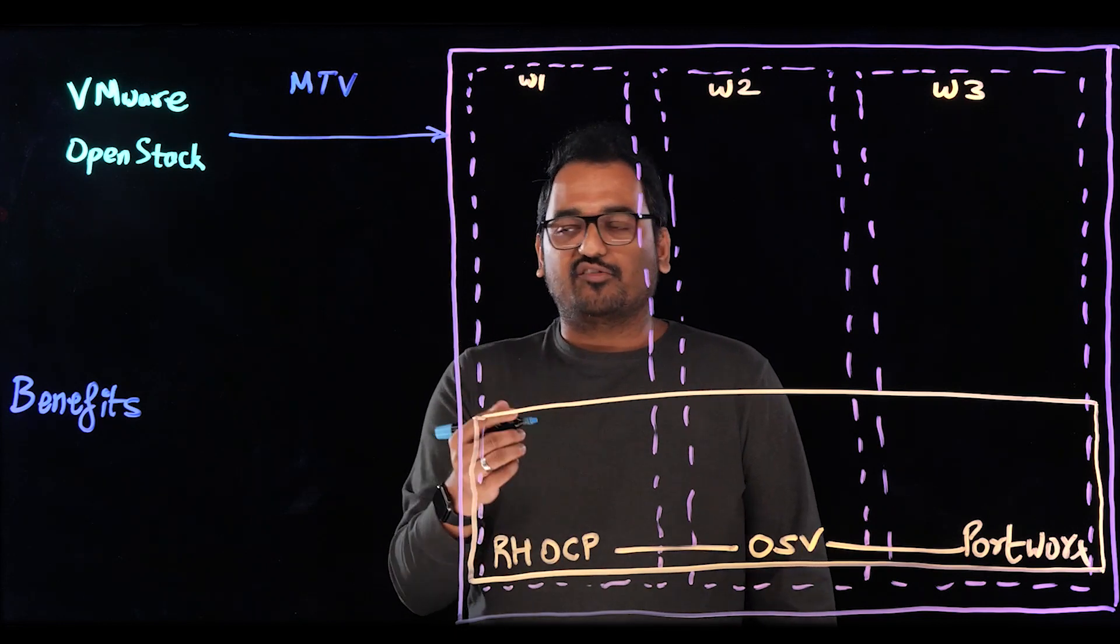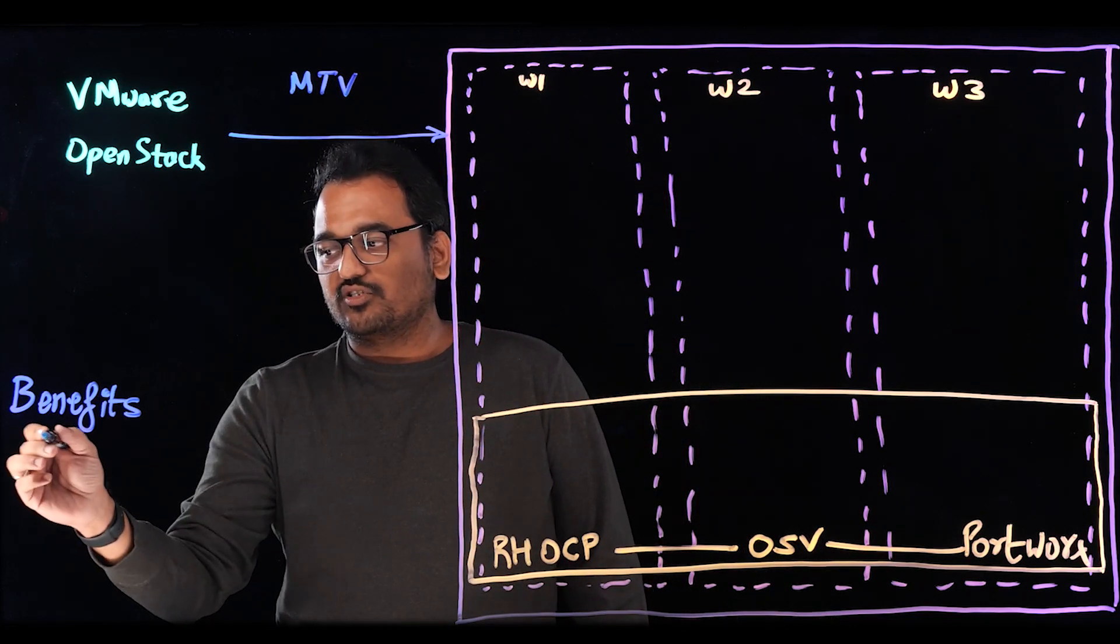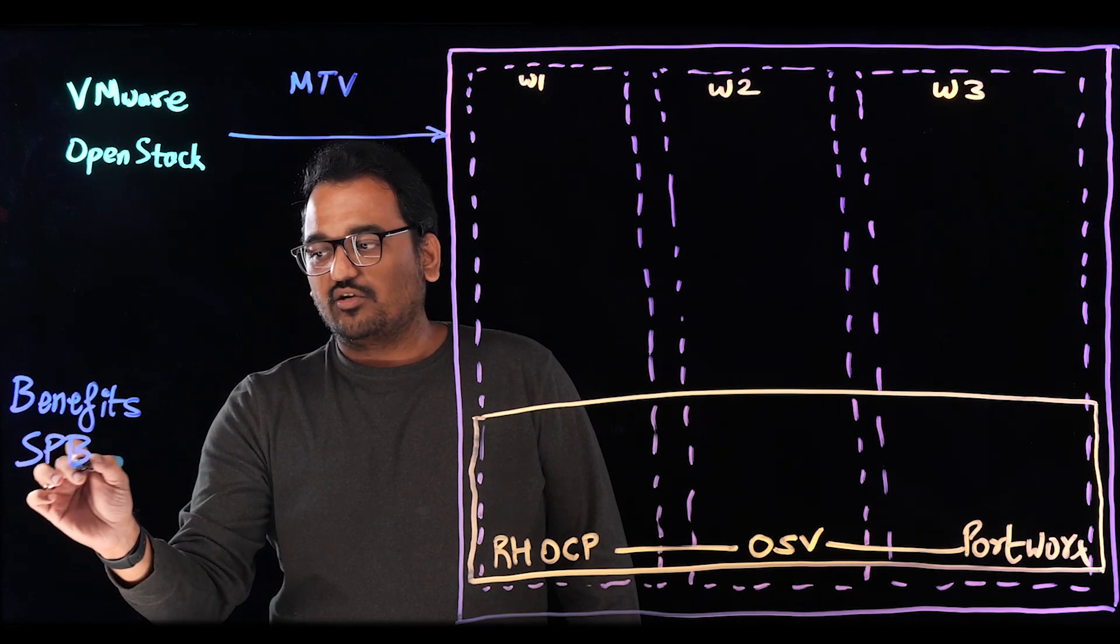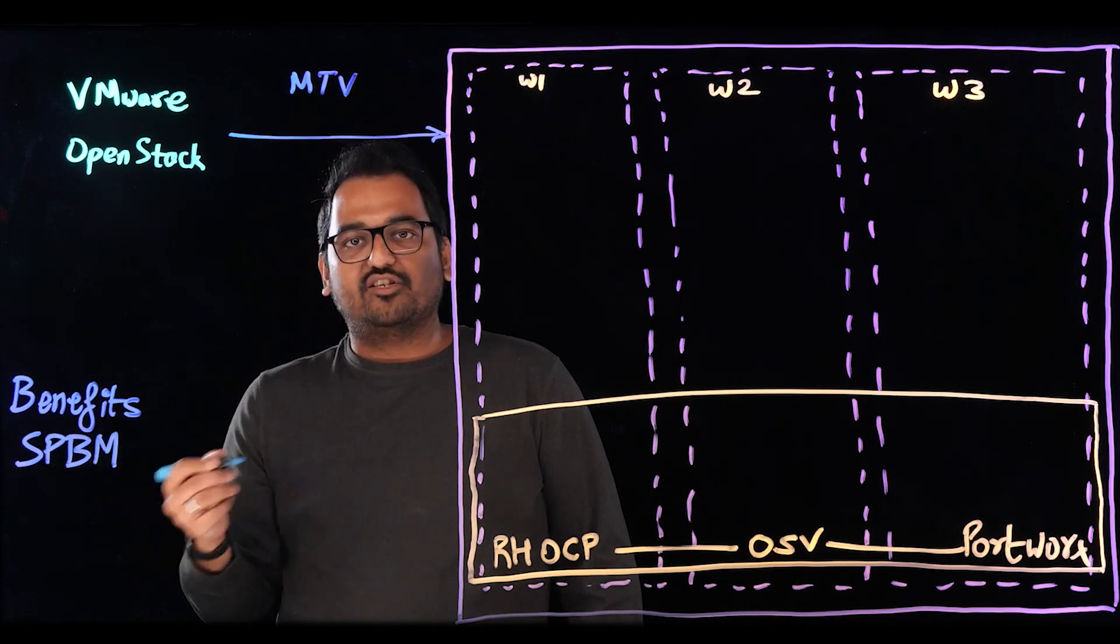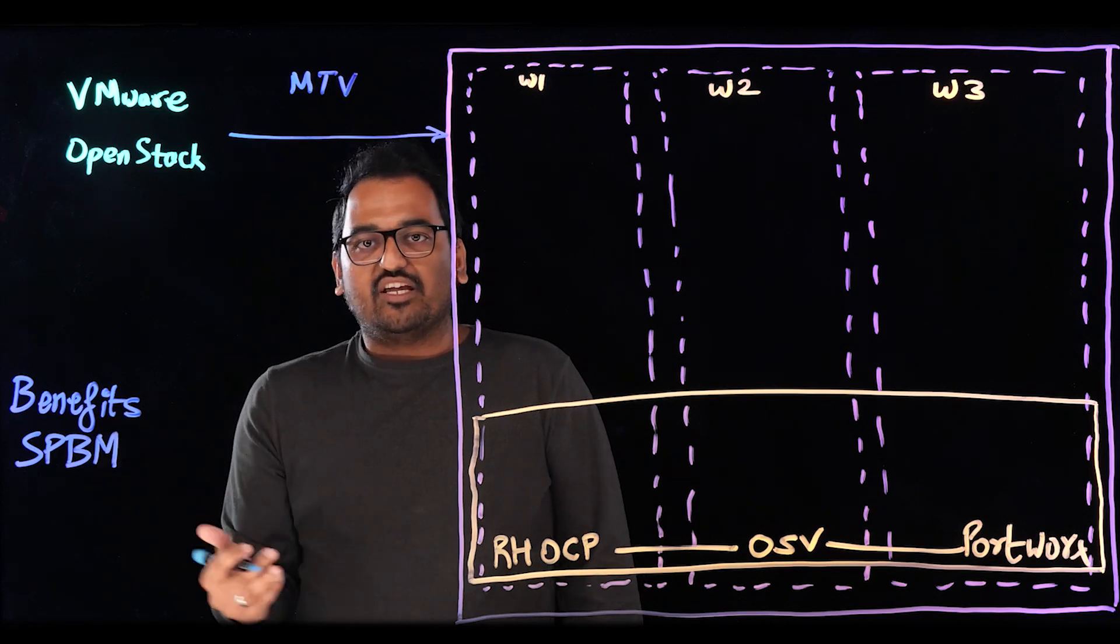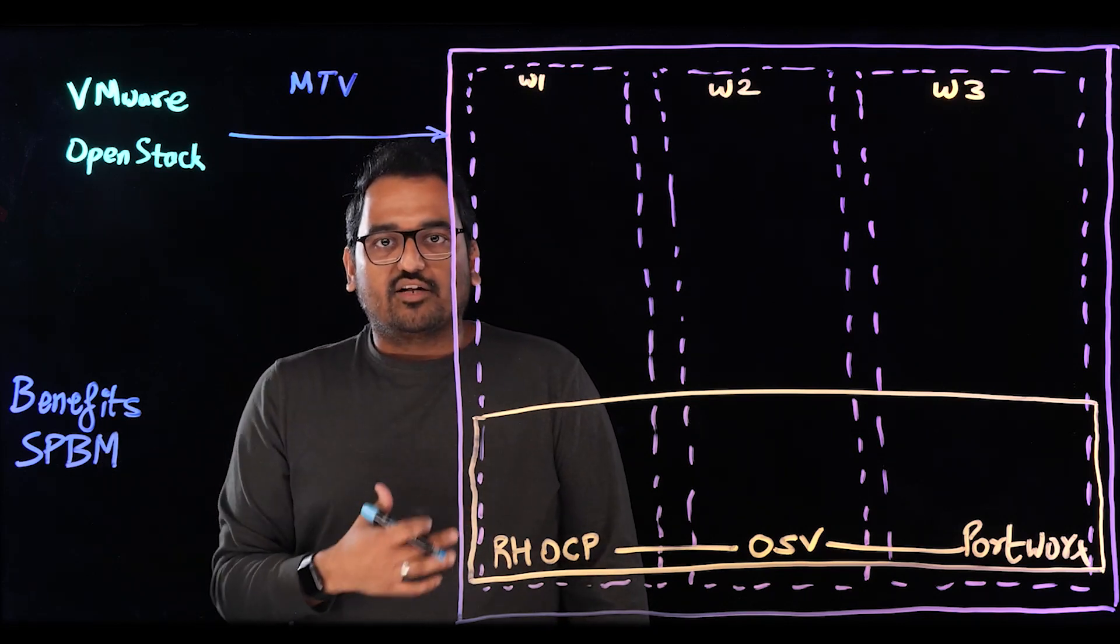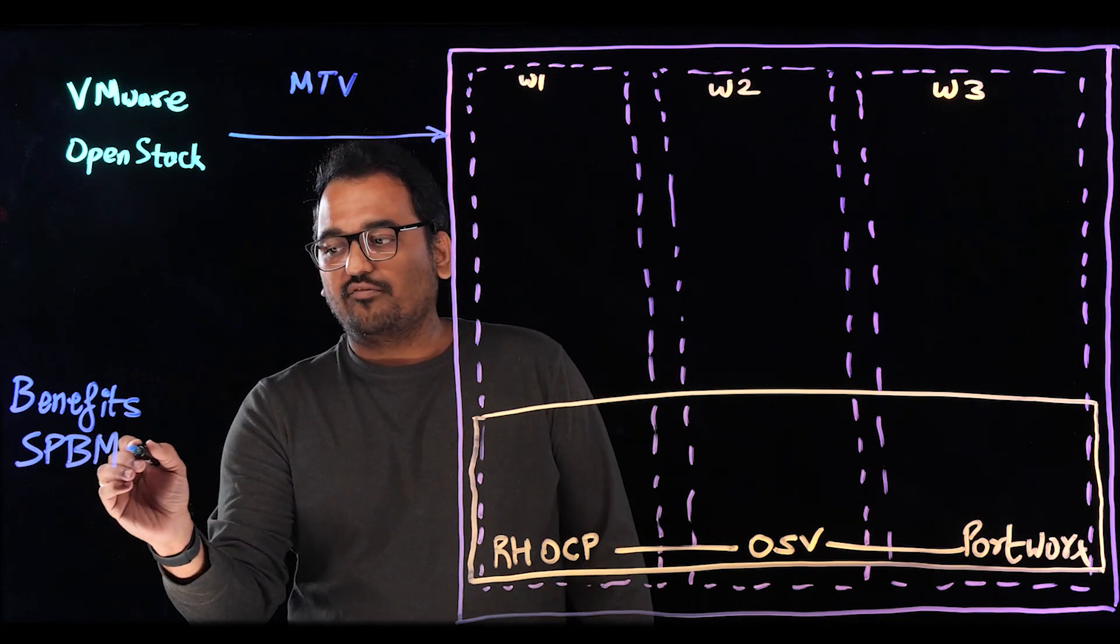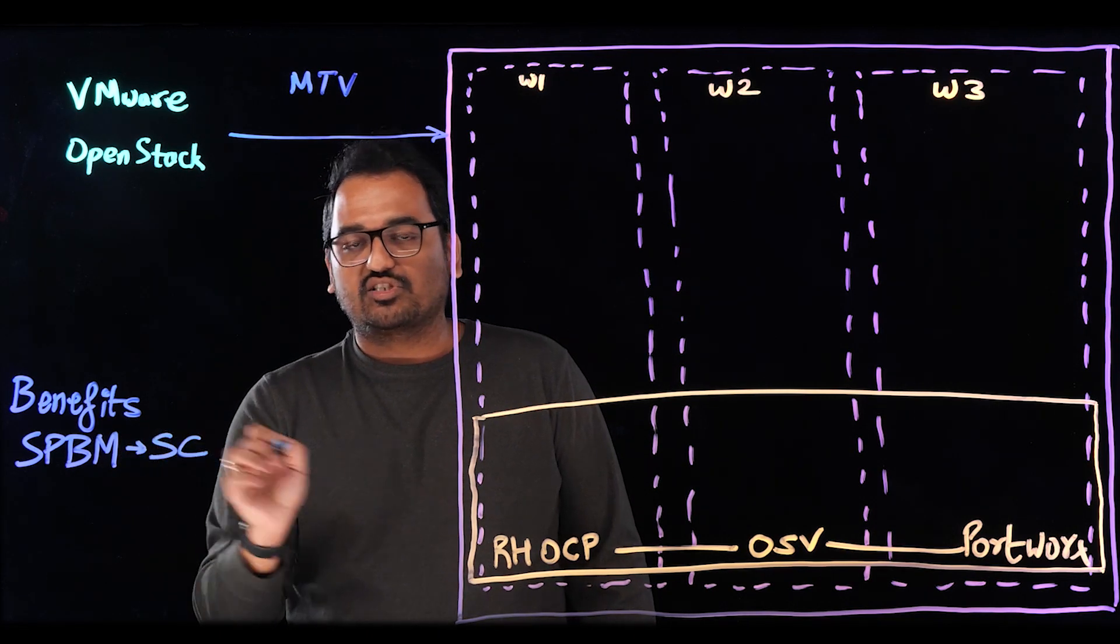So let's start by talking about the first one. The first benefit of running virtual machines on the modern virtualization stack is that you get to use storage policy-based management features as well. So SPBM, the way it works inside Kubernetes or the way it works inside OpenShift is by configuring something called Kubernetes storage classes.